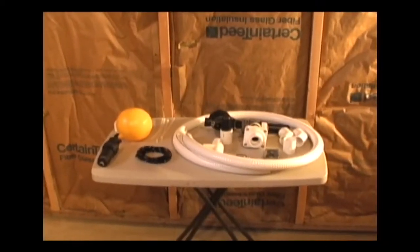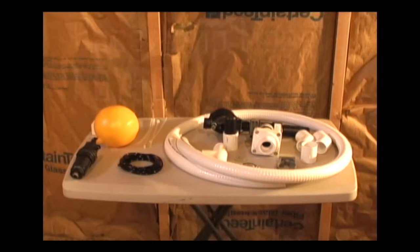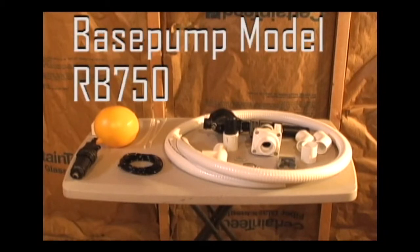This is a typical installation of a base pump model RB750. The best installation is independent of the primary sump pump, where it simply pours onto the ground or into an underground drain pipe.